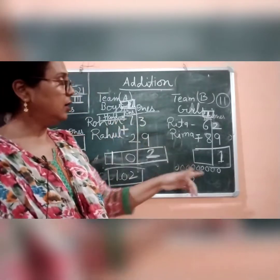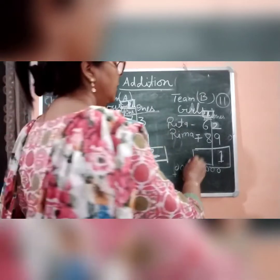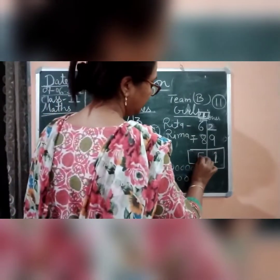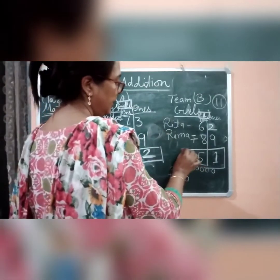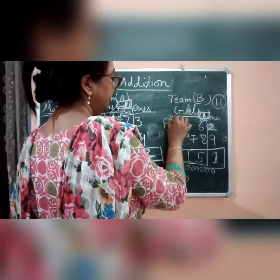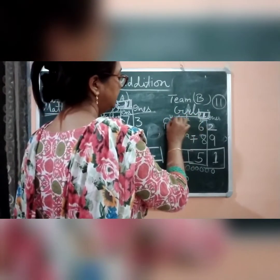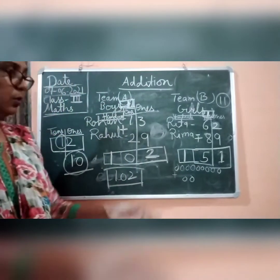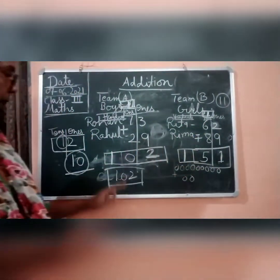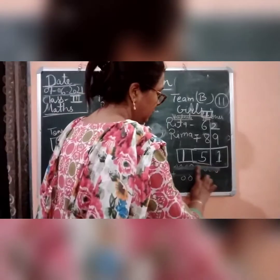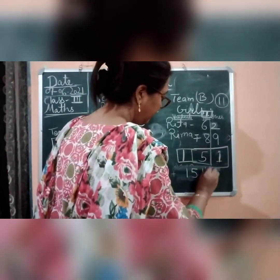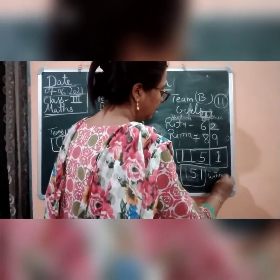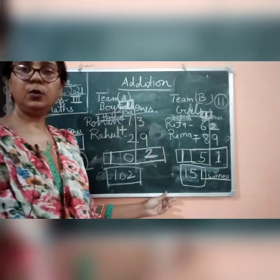Now adding the tens: 6 and 8, plus the carried 1. Counting: 8, 9, 10, 11, 12, 13, 14, 15. We get 15. So we write 5 in the tens place and carry 1 to the hundreds column. Therefore Team B's total score is 151. So the winner is Team B — the girls' team — with 151 against Team A's 102.